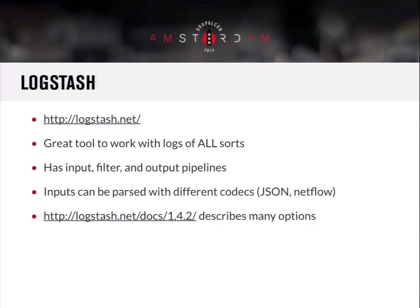Logstash is a great tool to work with all sorts of logs. As mentioned, it can be used as a shipper — you can run instances on your boxes to ship to a central one. Logstash works with three different pipelines: inputs, filters, and outputs. The inputs can also be specified to be in different codecs. A lot of the time you'll need to do some parsing — like parsing out from the combined Apache format — but if you have logs already in JSON format, you can specify that and they'll be parsed directly with keys and values intact. The current version is 1.4.2.